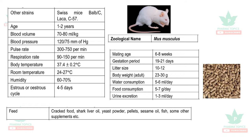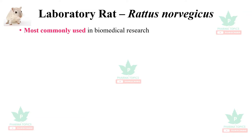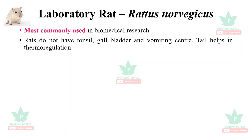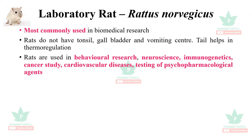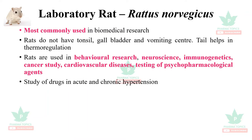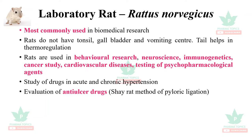The next laboratory animal is the rat, Rattus norvegicus, the most commonly used in biomedical research. Rats do not have tonsils, a gallbladder, or vomiting centers, so they cannot be used for studying anti-emetic drugs. The tail helps in thermoregulation. Rats are used in behavioral research, neuroscience, immunogenetics, cancer study, cardiovascular diseases, and testing of psychopharmacological agents, as well as for studying acute and chronic hypertension.